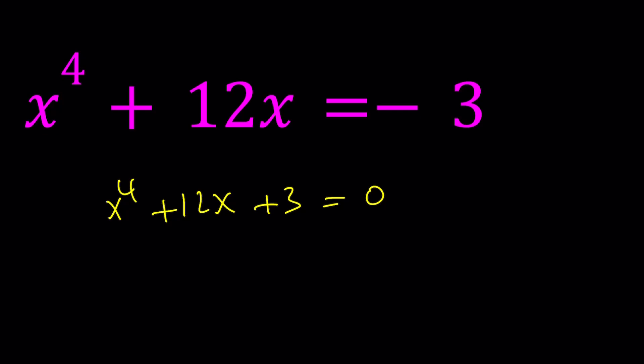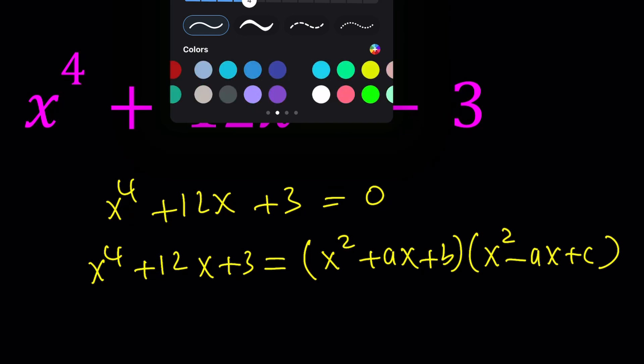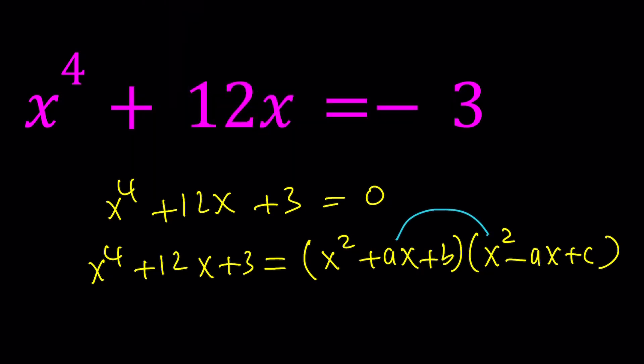If this is factorable in some way, shape or form, I can basically assume that this can be factored into two quadratics like this: x squared plus ax plus b and x squared minus ax plus c. Let me tell you the motivation behind plus ax and minus ax. When you multiply ax by x squared, you get ax cubed, and when you multiply x squared by negative ax, you get negative ax cubed, so they cancel out. Since we don't have any terms with x cubed, that is automatically applied.